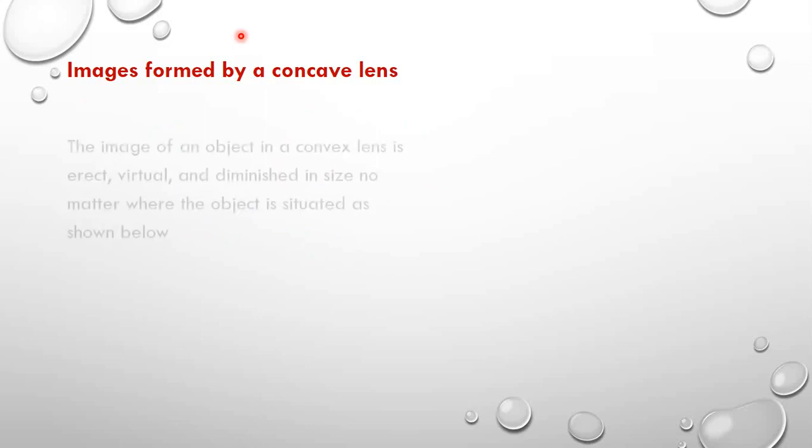Let us begin by looking at the images formed by a concave lens. Images formed by a concave lens are always the same, no matter where you place the object. These images are always erect, they are always diminished, and they are always virtual.